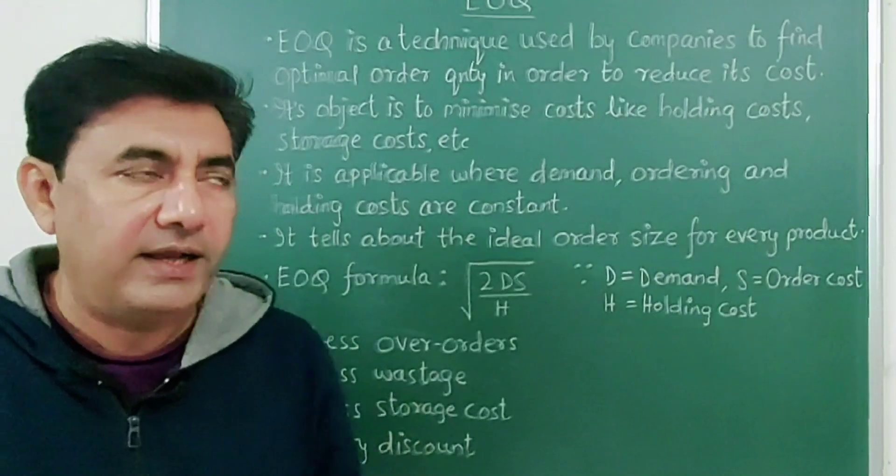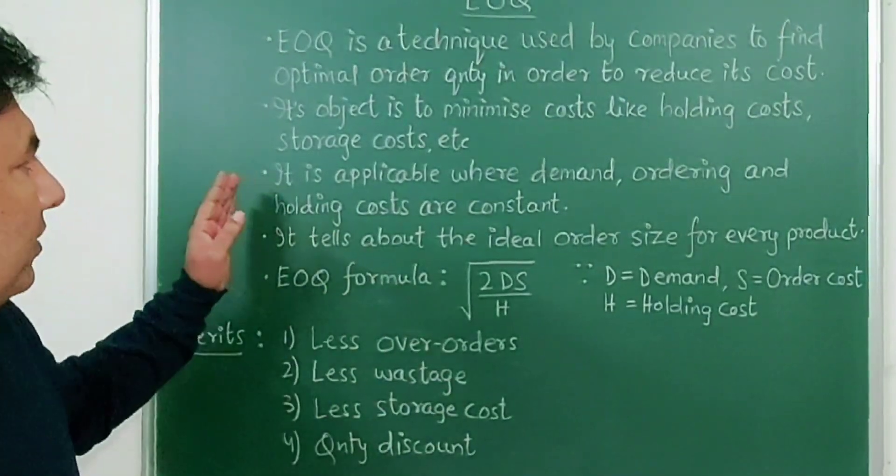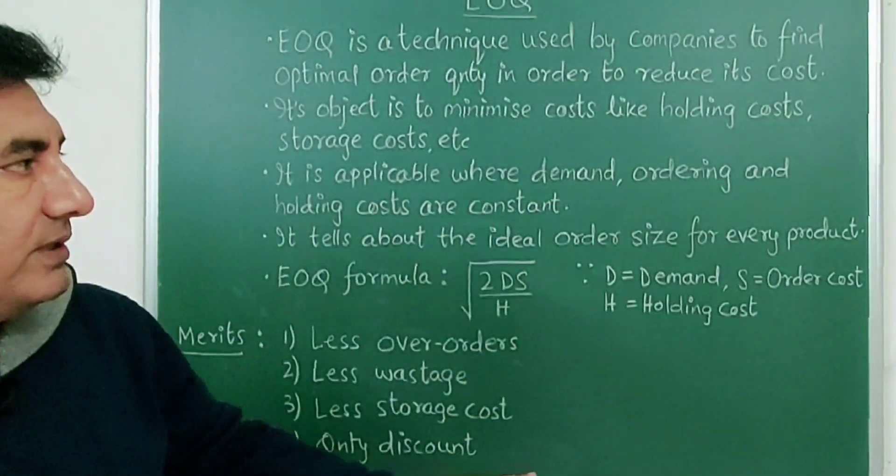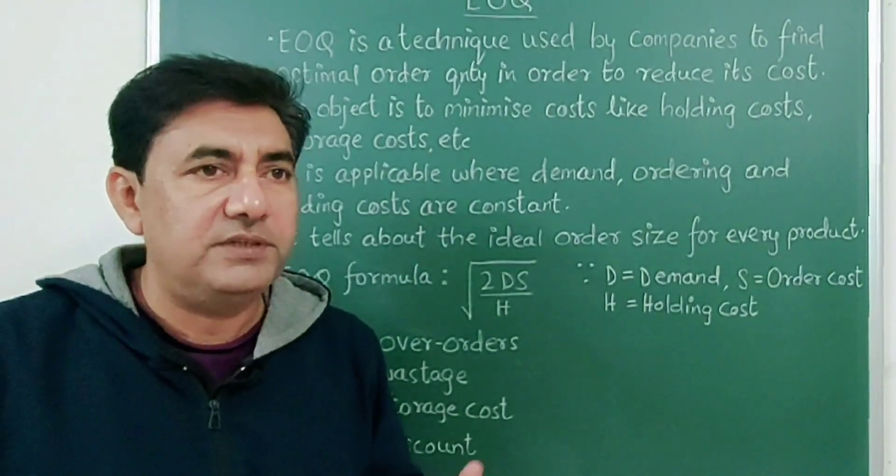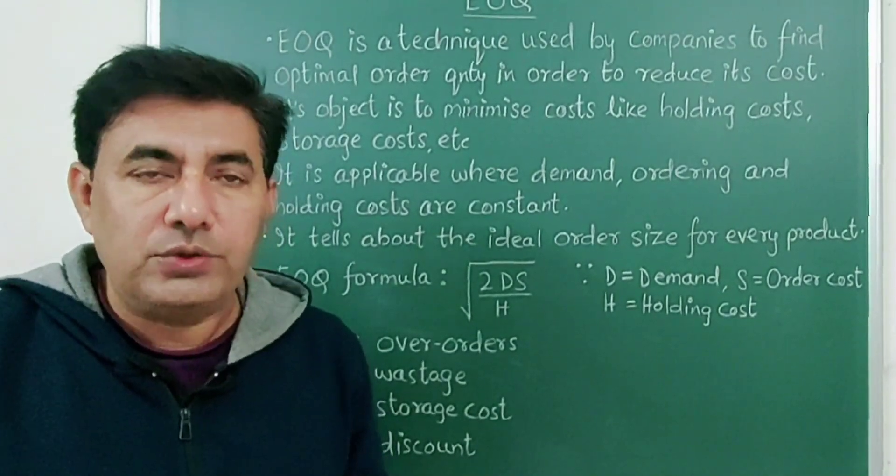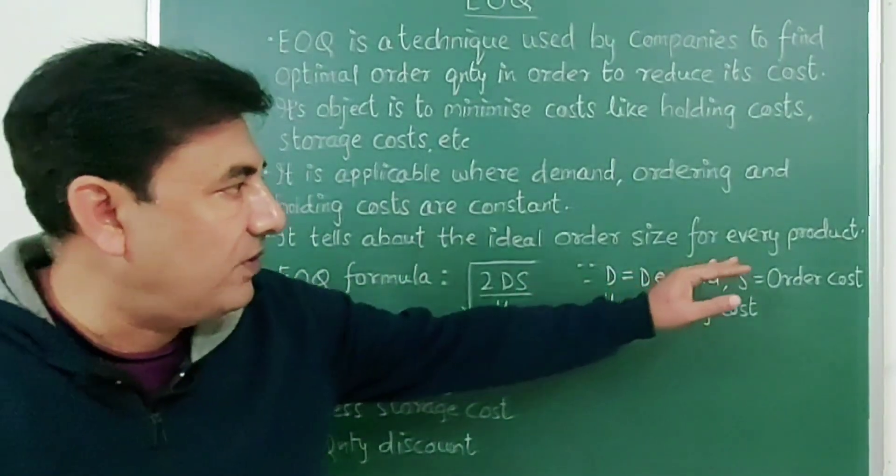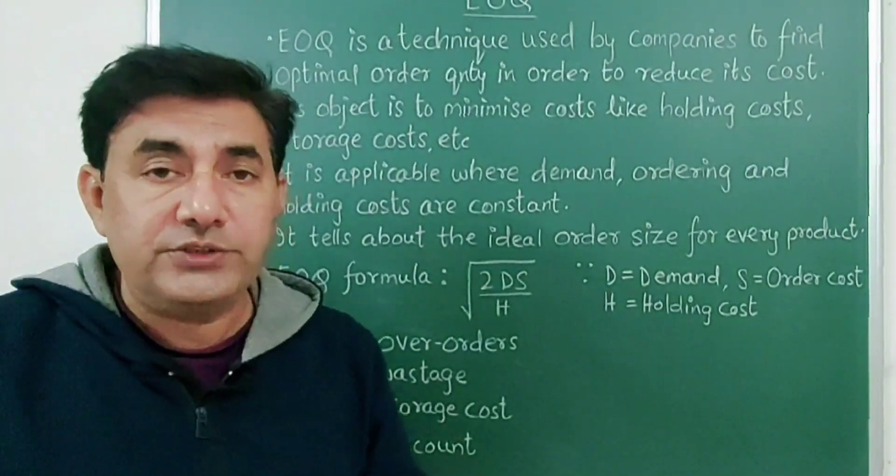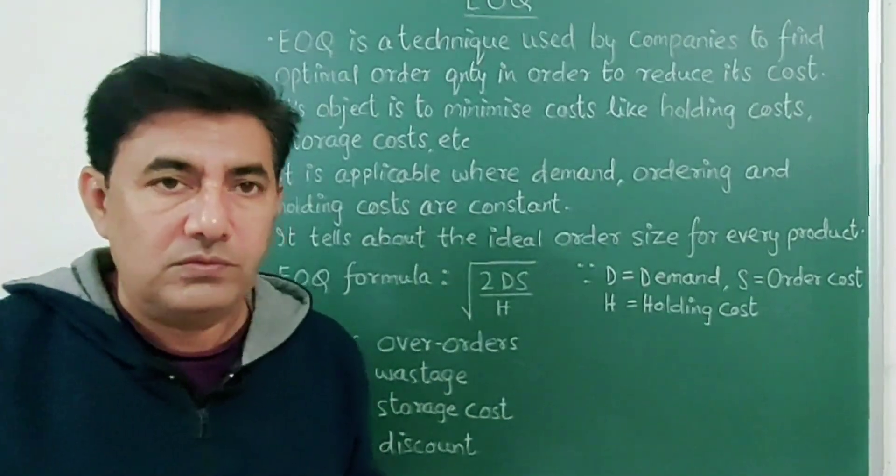Then, it is applicable where demand, ordering and holding costs are constant. Now this third point is very important. This technique can only be used where the demand is constant, where the orders are constant, and where the holding costs are constant. Holding costs means the cost to keep or store inventory or stock. That should be constant. Then, it tells about the ideal order size for every product. Whatever raw materials the company purchases, what should be its ideal order size? What should be its ideal or the right order size so that there's no overstocking or understocking?